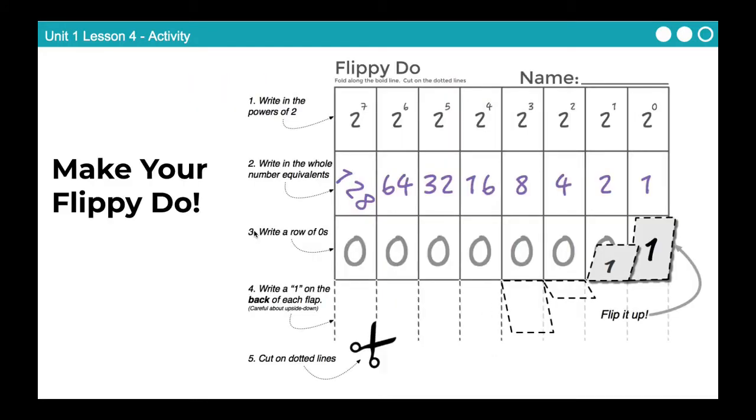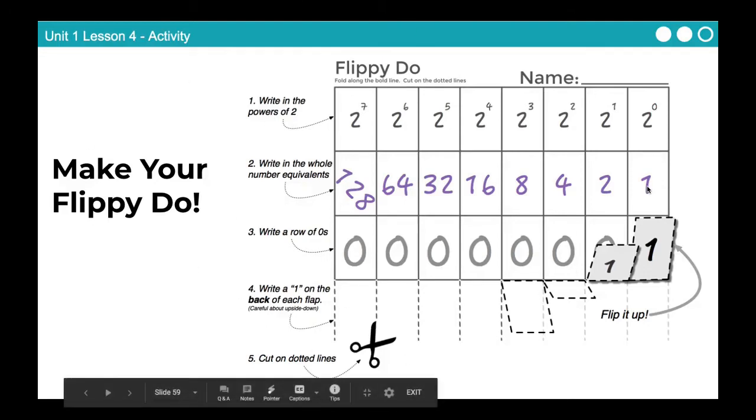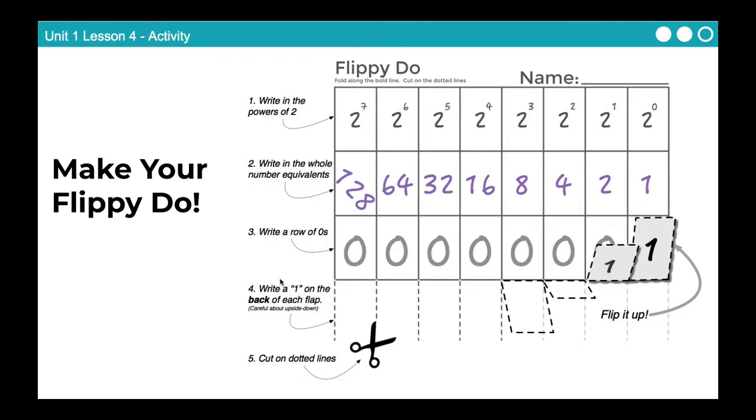Okay, some of you may have already completed this in class, but if you have not completed it yet, please pause the video here and come back to it after you've completed this activity. So you should have a handout that looks similar to this, and it's got instructions on how to make your own Flippy-Doo. The Flippy-Doo is a tool that we use to get used to binary. So follow the instructions here. If you've lost the handout, all the directions are right here. So just pause it here and follow them. And then when you're done, come back to the video.